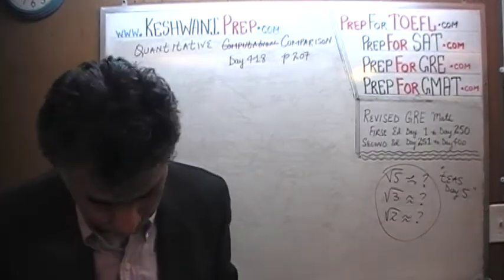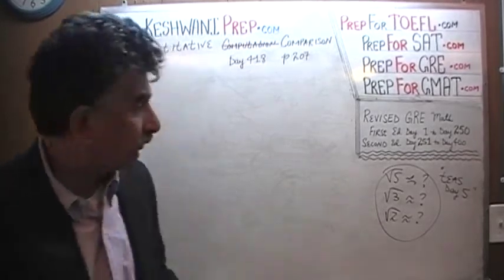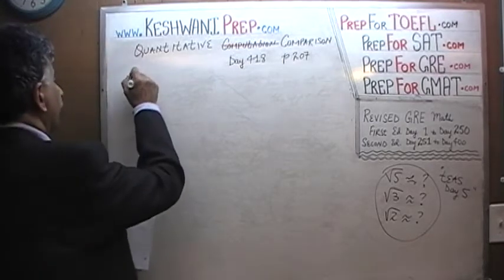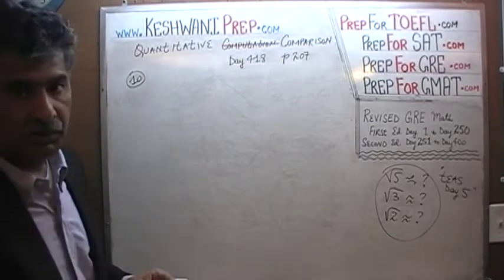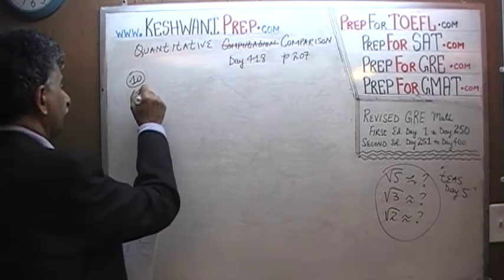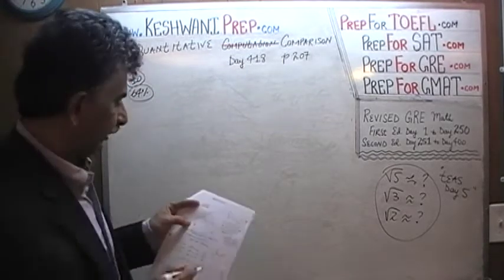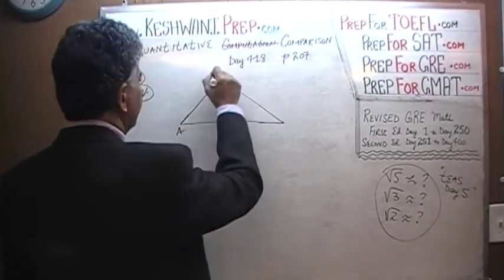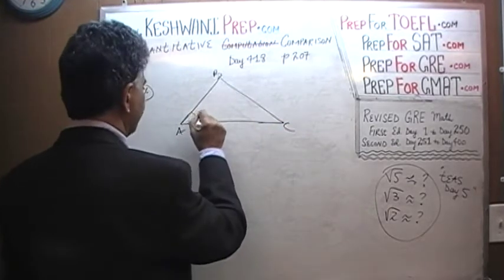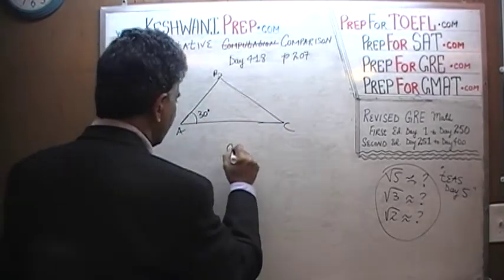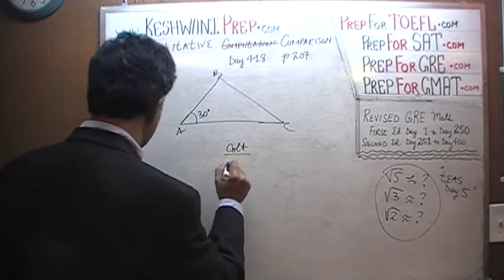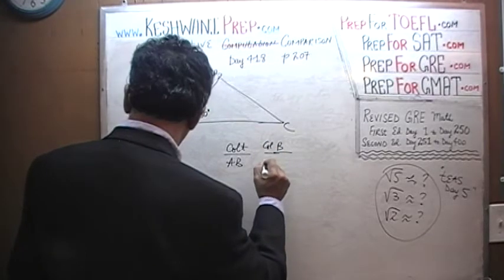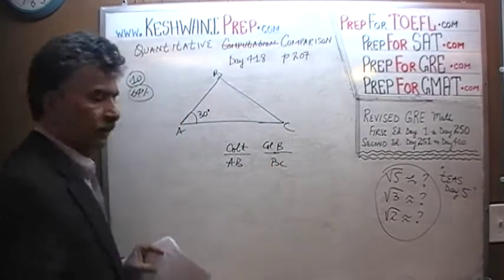Quantitative comparison, question number 10. When it was given in the real exam, 64% of people got it right — about a third of the people missed it. Here is the problem: it's a geometry question. We are given a triangle here, A, B and C. We are told that angle A is 30 degrees. In column A we have the length of AB, and in column B we have the length of BC. Let's see what we can do.